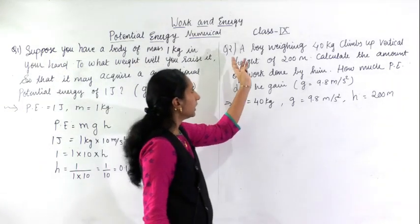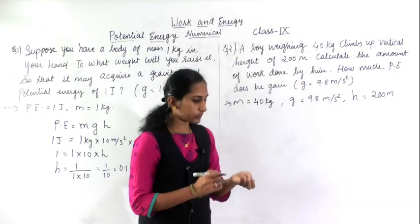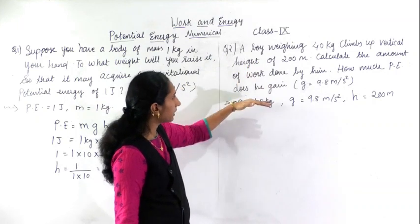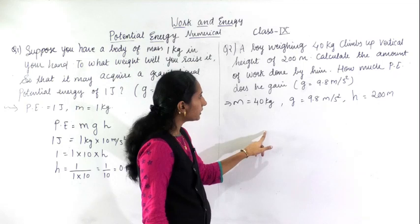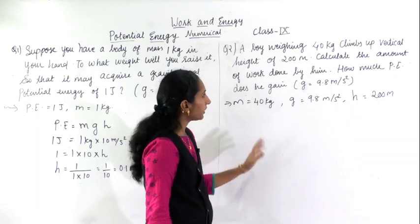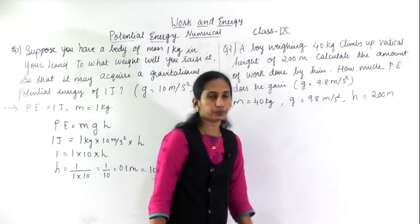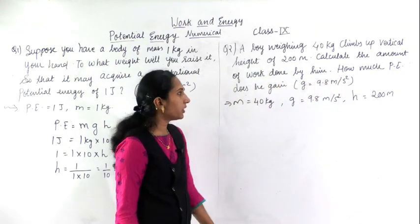We will go for the second problem. A boy weighing 40 kg climbs up a vertical height. He is climbing a vertical height of 20... 200 meters. His weight is 40 kg, climbing 200 meters. Calculate the amount of work done by him. You have to calculate the amount of work done, means W you have to find here.